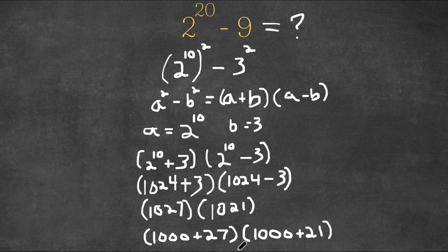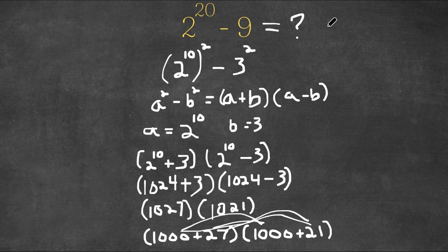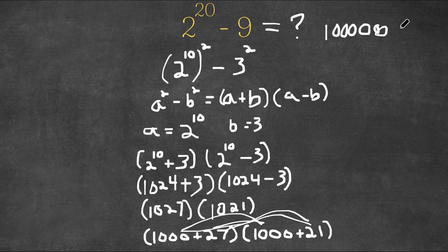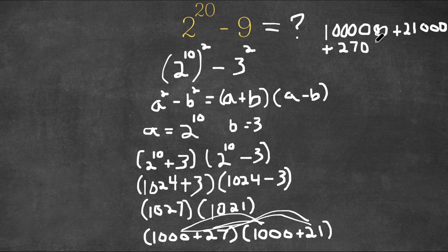Now what we're going to do is we're going to distribute. So we're going to do 1,000 times 1,000, 1,000 times 21, 27 times 1,000, and 27 times 21. Now 1,000 times 1,000 is 1,000,000, plus we have 21 with 3 zeros, plus we have 27,000 plus 567.